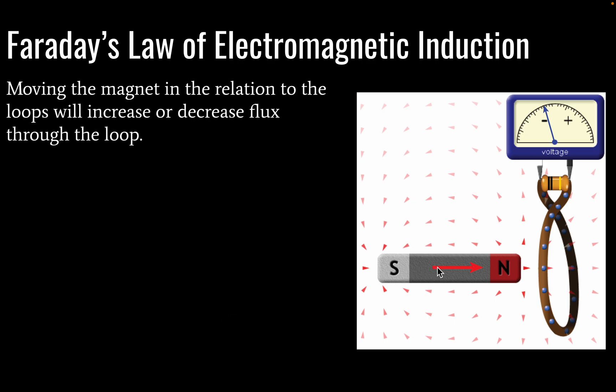So now if we move our magnet in relation to this loop, what we're going to find is that our flux is going to either increase or decrease. So when this happens, we're going to induce a current to flow in the conductor. So you can see here, we now have voltage, we have an induced EMF and an induced current.